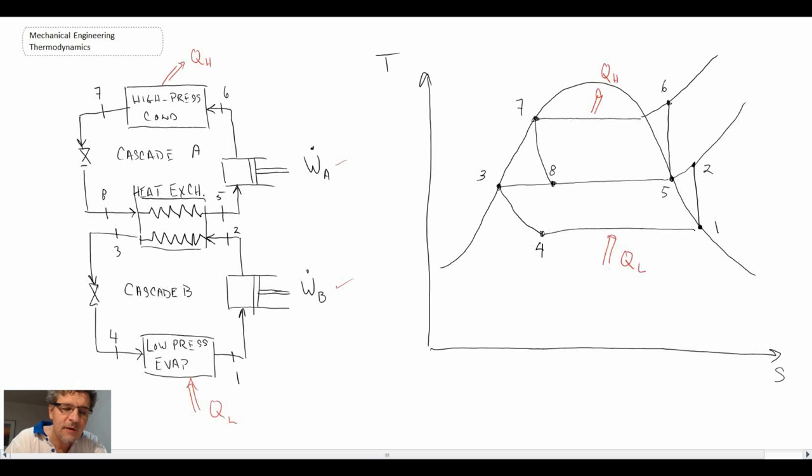Heat exchange is going on between the two working fluids. When we look at this on the process diagram, above we have cycle A and then below we would have cycle B.